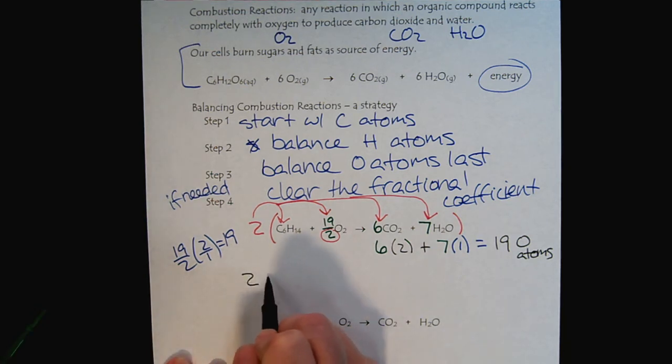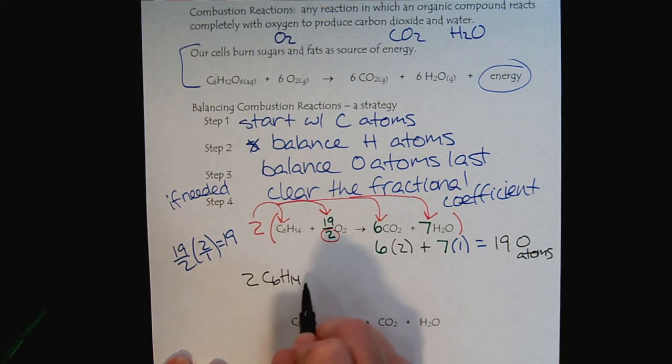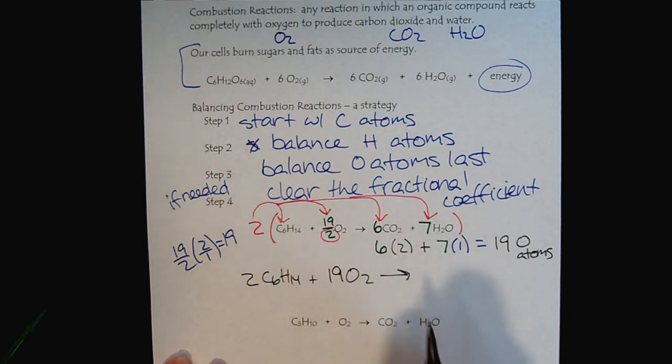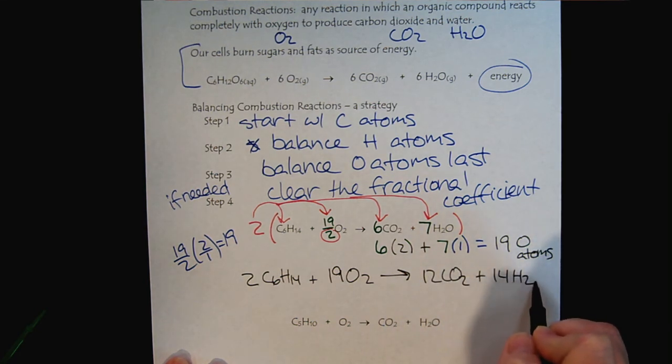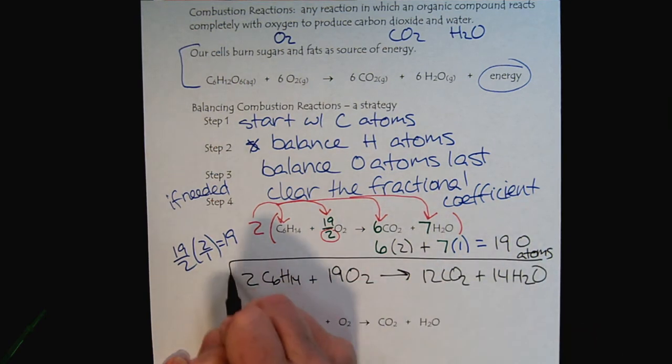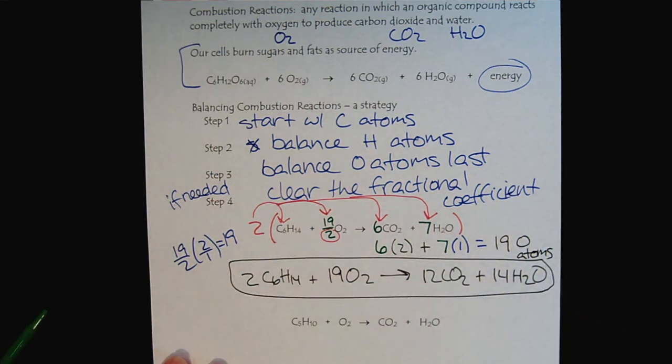At the end, our balanced reaction would be 2 carbon, or 2 C6H14s, 19 oxygens, produces 12 CO2 and 14 waters. So now we have balanced the reaction that we were given.